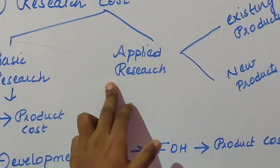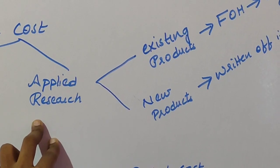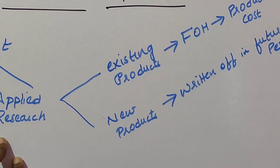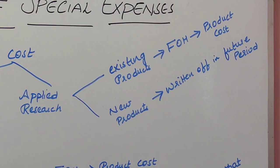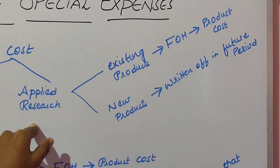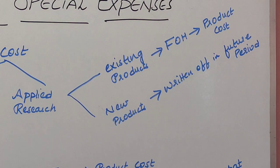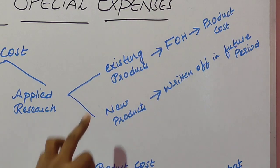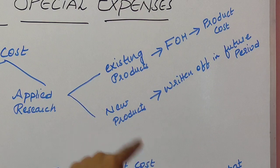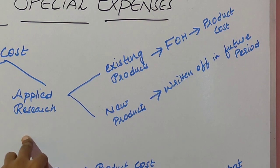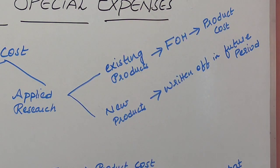Applied research is the practical implementation of theories — when you try to solve problems and bring solutions to different questions. It is the implementation of basic research. Applied research is generally practical, with the outcome being development of techniques or technology. If applied research cost is incurred for bringing improvements in existing products, it is treated as factory overhead and attached to the product cost.